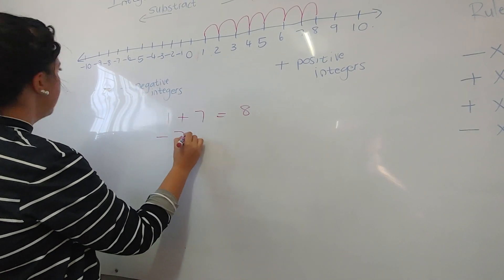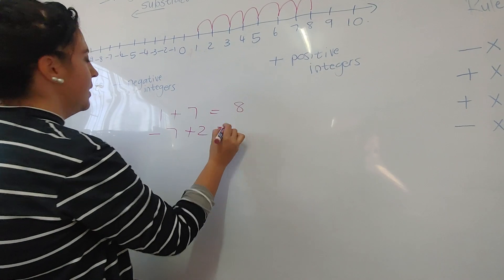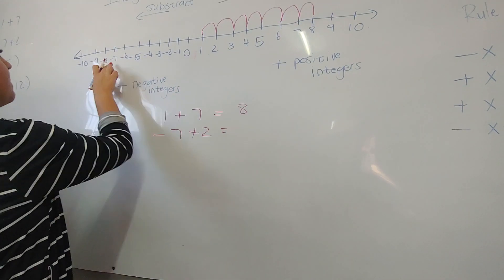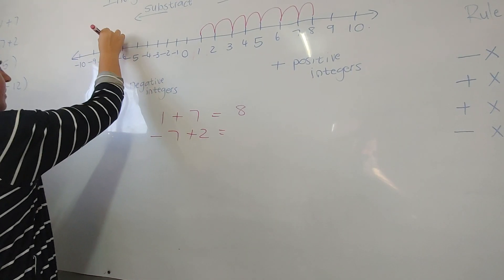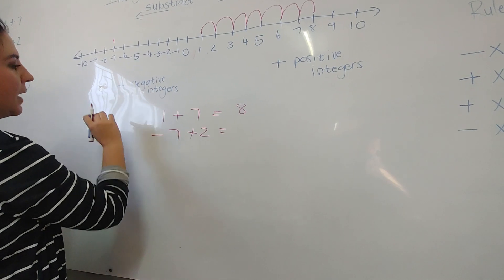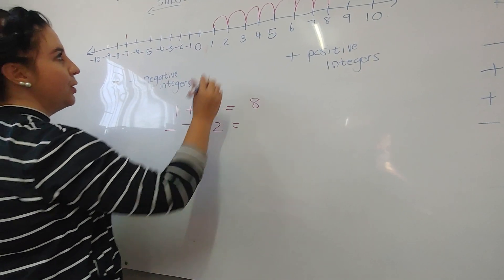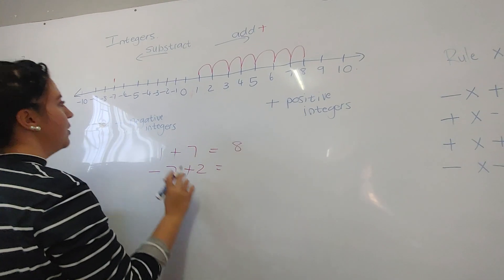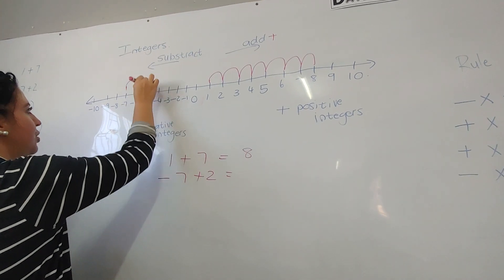The next one is -7 + 2. If you're going to look this side, -7 is here. I have to plus two. I'm going to have to add two. So I'm going to move this side. One, two. My answer is going to be -5.